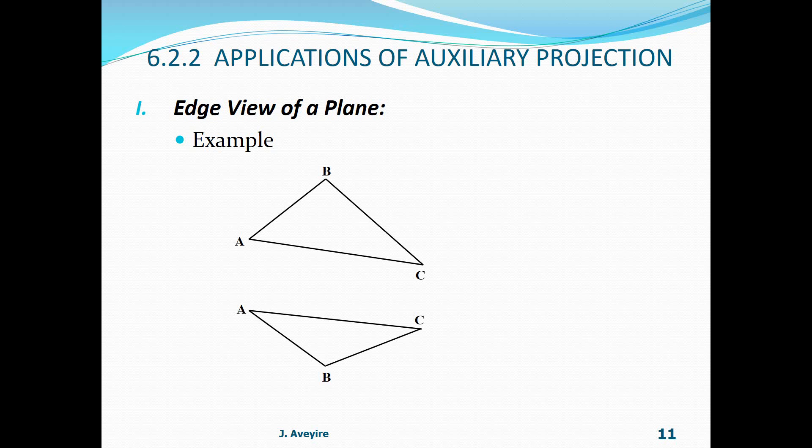Edge view of a plane example: here we have two views of a triangle, plane ABC — the front view and the top view. Looking at this, if the edge view of that plane is required, let's first check if any edges indicate a true length. Taking AB in the front view and top view — none is a true length. Likewise AC in the front and top view — also not a true length. Then edge BC in the front view and top view — that also is not a true length. This means we cannot use the projection along any of the edges.